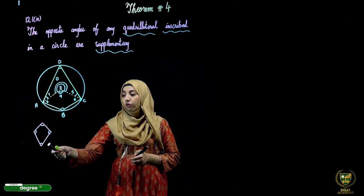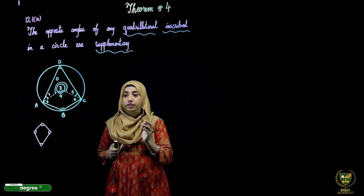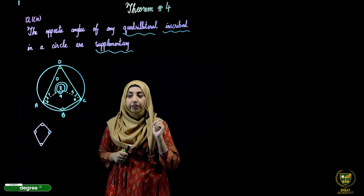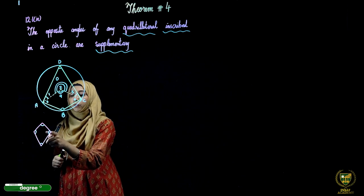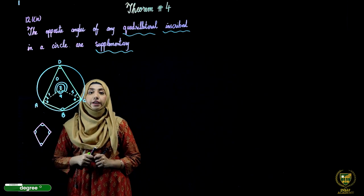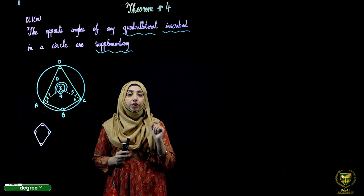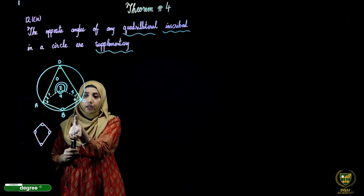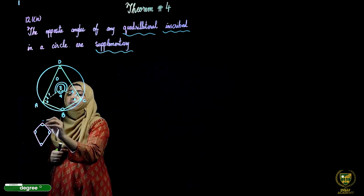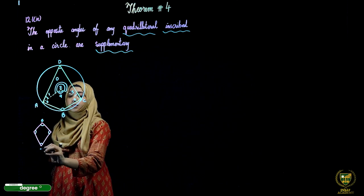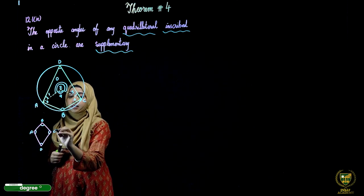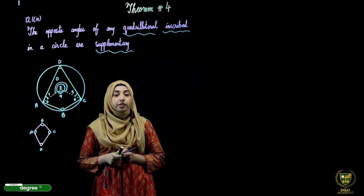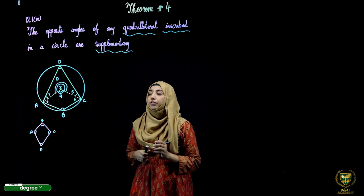It means if we add these two angles, the answer should be 180 degrees. Similarly, if we add the other two angles, the answer should also be 180 degrees. Since the quadrilateral here is tilted, I'll mention accordingly: this is B, this is D, this is A, and this is C. This is our quadrilateral which we are discussing inside the circle.